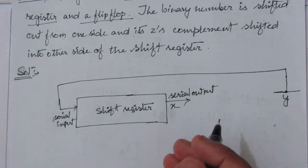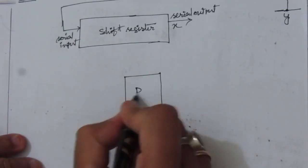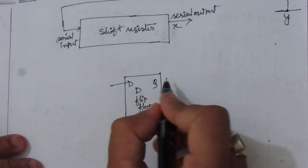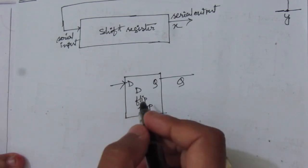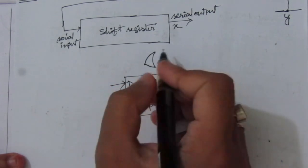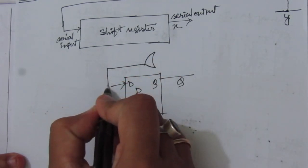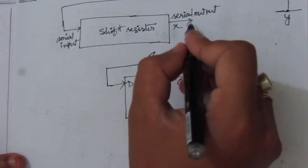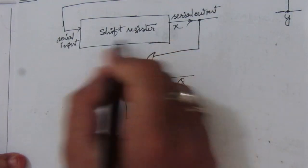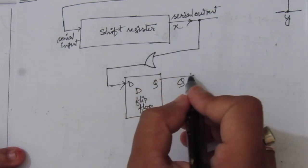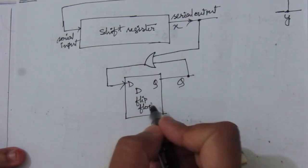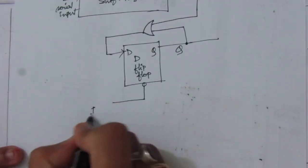We have to use another flip-flop also. Suppose this is a D flip-flop with D input and normal output Q. For the input of this D flip-flop we will use an XOR gate — I will explain later. The output of this XOR gate will be connected to the D input. One input will be from the x output, which is the bit output of the shift register, and the other input is the Q output of the D flip-flop.